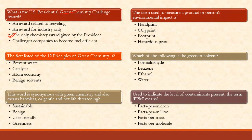The first listed of the 12 principles of green chemistry is: prevent waste. If you want to remember it, you can go and watch the video on principle number one — prevent waste — on my channel.